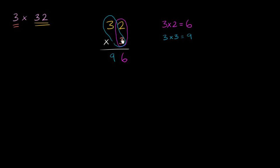So we're done. We got 32 times 3 is 96. And I really encourage you to think about why this worked. And I'll give you a little bit of a hint here. I'll give you a little bit of a hint about why this worked.